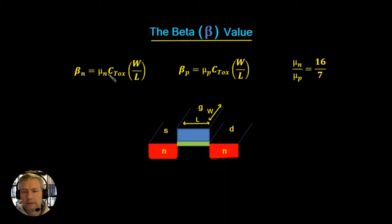Now a thing to note here is maybe a rule of thumb, which is that the ratio μ_N to μ_P is approximately 16 upon 7. So that is, the electrons will flow faster than the holes. The electron mobility is greater than the hole mobility.